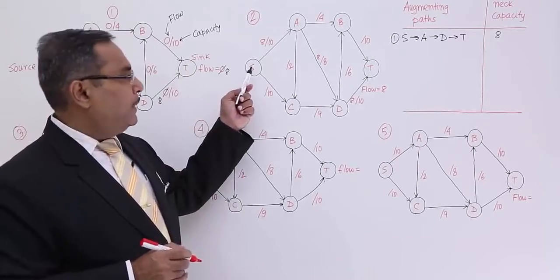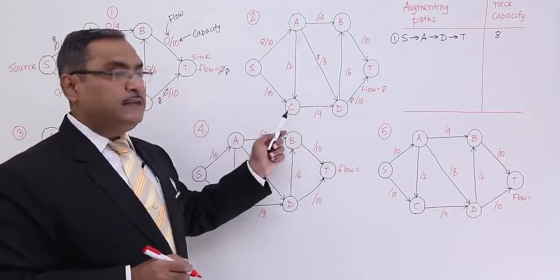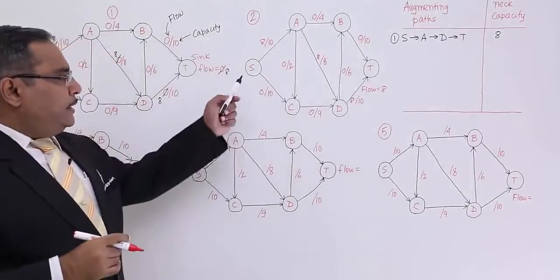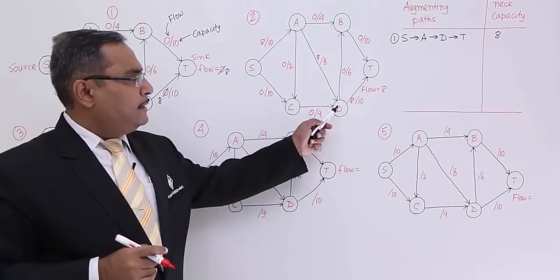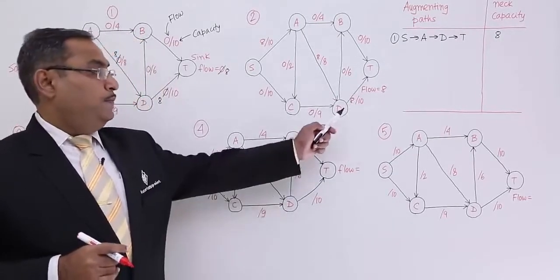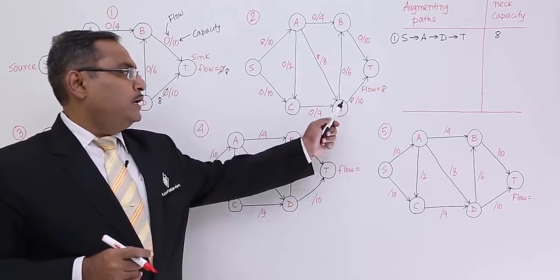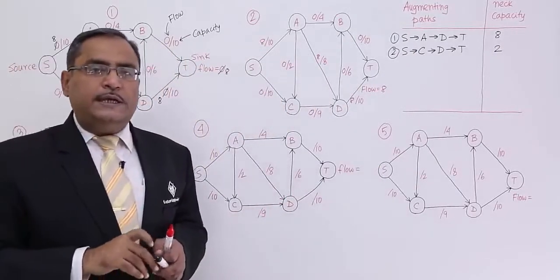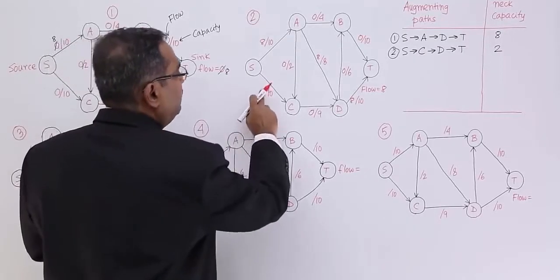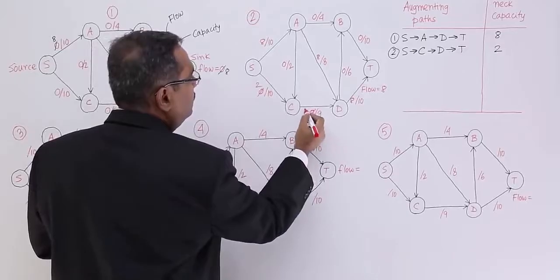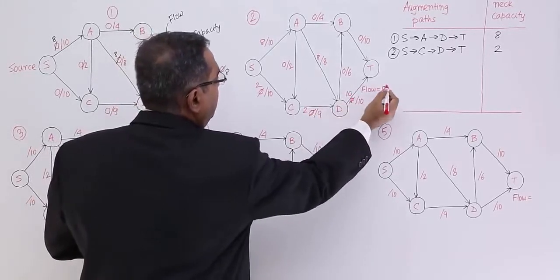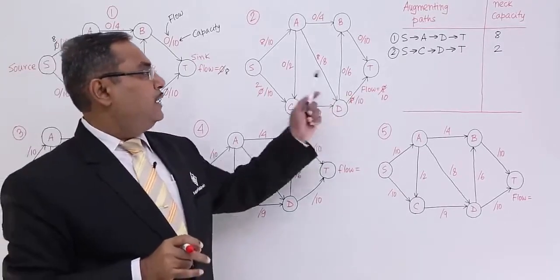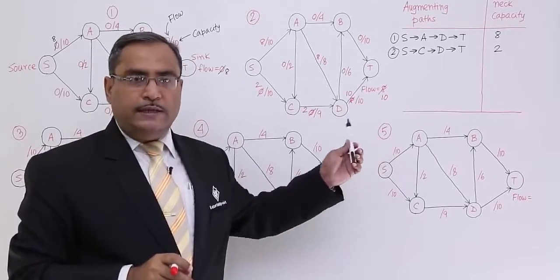The next augmenting path we consider is s→c→d→t. Here the capacity is 10, capacity is 9, and the residual capacity here is 2 — I should consider the residual capacity, not the capacity. So the bottleneck is 2. Now we are selecting this path where the residual capacity is 2. Adding 2 to the path, the flow will become 10 in total. The total flow has become 8 plus 2 equals 10.